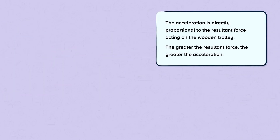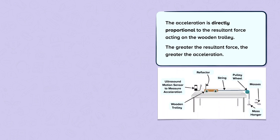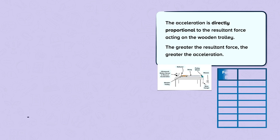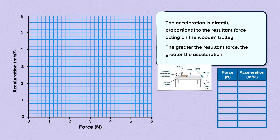The acceleration is directly proportional to the resultant force acting on the wooden trolley. The greater the resultant force, the greater the acceleration. We can carry out an experiment where we increase the force and measure the acceleration. As we collect our data, we can plot our points on our graph. As we fill the graph, we can see that the points are following a straight line. Once all the data has been plotted, we can draw a line of best fit, which is a straight line through the origin.